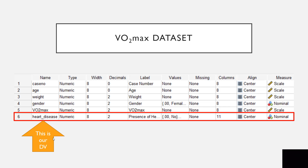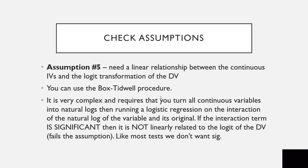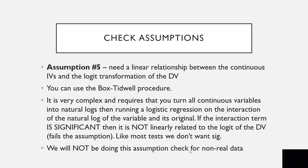Here is our data set. The dependent variable is heart disease, coded 0 for no and 1 for yes. For assumption 5, there needs to be a linear relationship between the continuous independent variables and the logit transformation of the dependent variable. You can use the Box-Tidwell procedure, but it is very complex — you change every independent variable to its natural log transformation and then run a series of regressions. If the interaction term is significant, it is not linearly related to the logit of the DV and fails the assumption. We are not going to check this for non-real data, so we will move forward and say we meet this assumption.